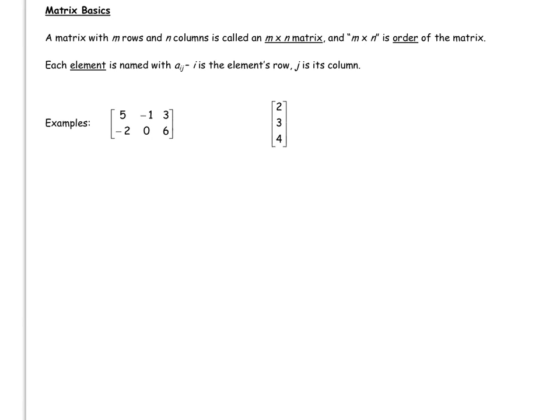Our first definition here is the order of a matrix. So a matrix with m rows and n columns is called an m by n matrix, and the m by n is its order. In our examples here below, you'll note that this first matrix has two rows and three columns.